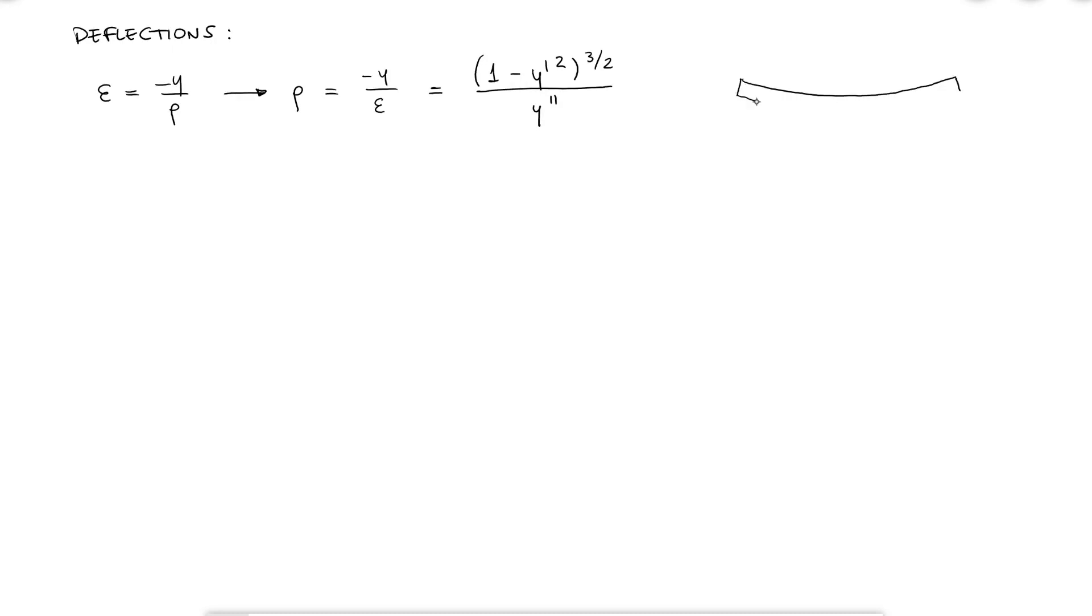If we look at a beam that has been deformed by external couples, point loads, or distributed loads, we'd see that y prime, which is the slope of y, and therefore the slope of the beam, is usually very very small. So if we take a very small value and square it, it's gonna be even smaller. 1 to the 3 over 2 is still 1, and therefore I can write this expression as minus y over epsilon equal to 1 over y double prime.